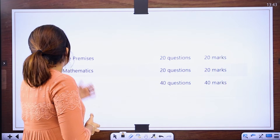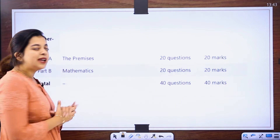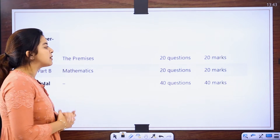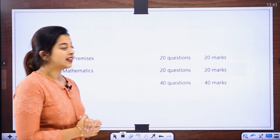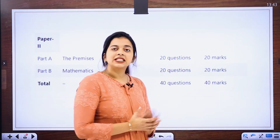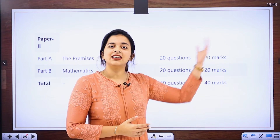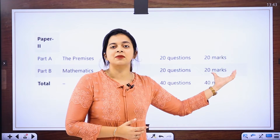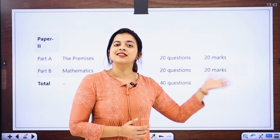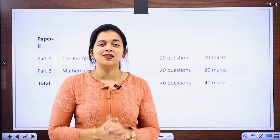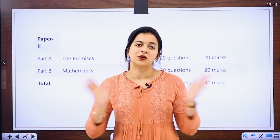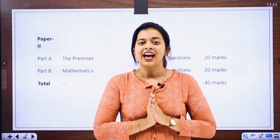In Paper 2, Part A covers Mathematics and Part B covers Mental Ability. Each part has 20 questions worth 20 marks, making Paper 2 a total of 40 questions and 40 marks. Combined with Paper 1, the grand total is 80 questions and 80 marks.